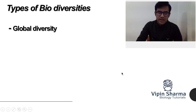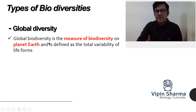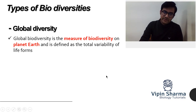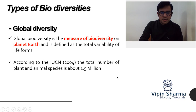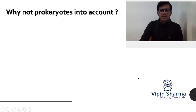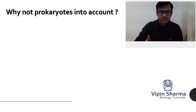Now comes the major one — global biodiversity — which covers the whole planet. It is defined as the total variability of all life forms on Earth, the biggest picture measuring biodiversity across the entire planet. In 2014, it was estimated to be about 1.5 million species, but now it is estimated to be close to around 7 million.